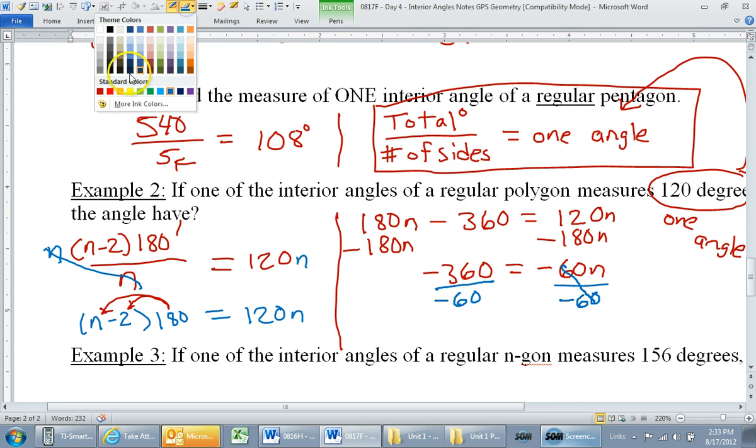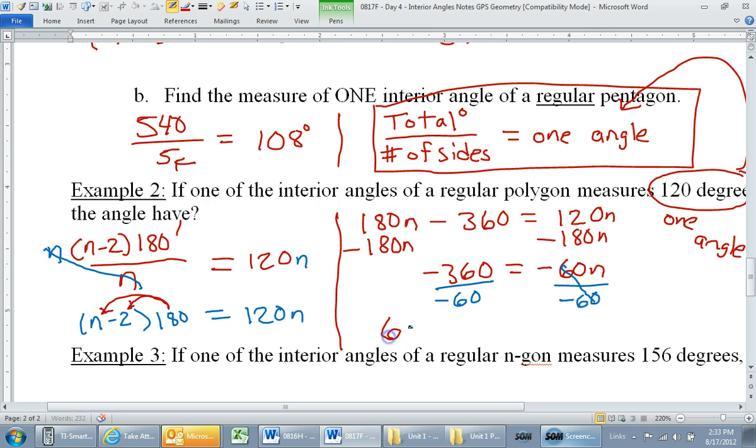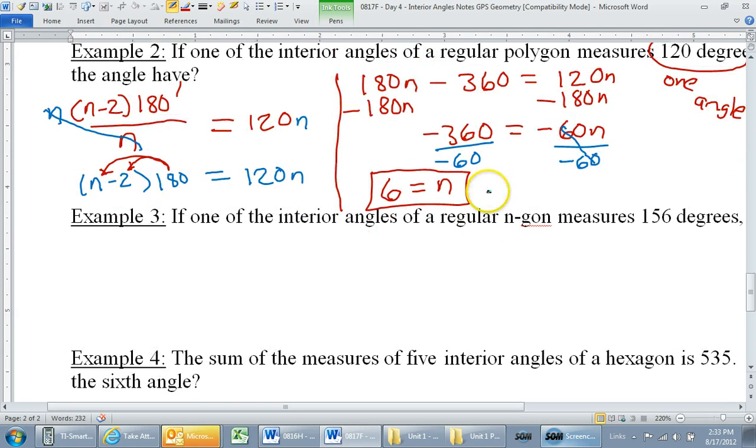Beautiful. So that gives us N equals 6. So that means if we have a shape that's six sides—yeah, what is that called? That's a hexagon. If we have a hexagon, that's going to give us each angle of 120 degrees. Now it's your turn. Example three is pretty much the same problem, just worded differently. 156 degrees, they're still telling you that that's one angle. We're still trying to find the number of sides. So go ahead and try example three.